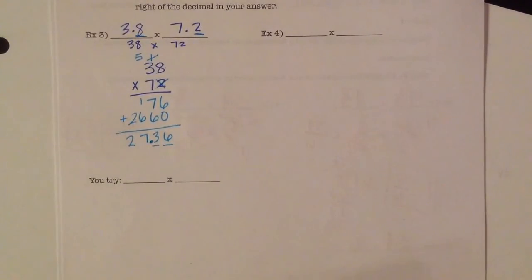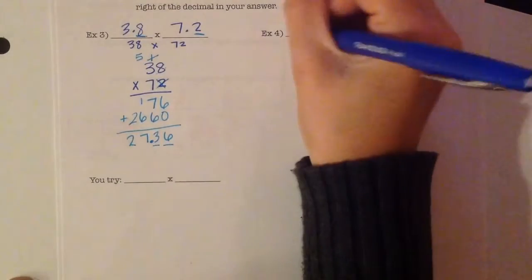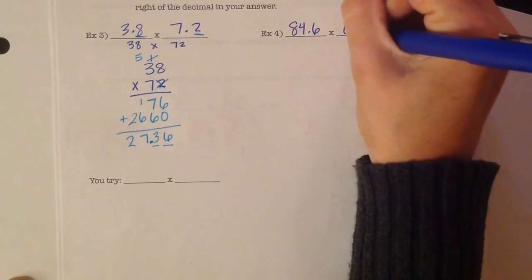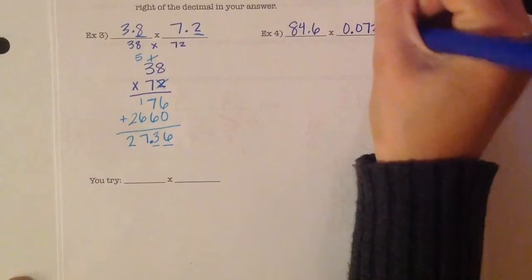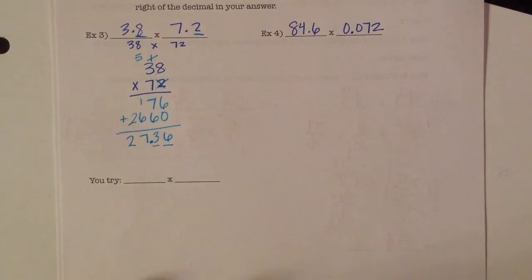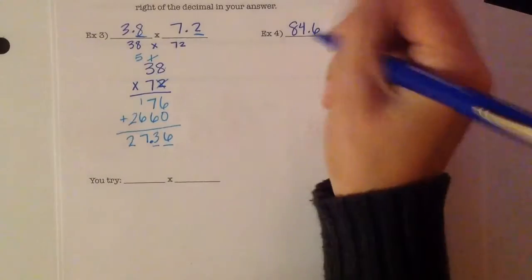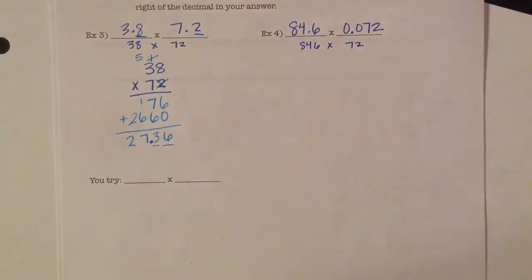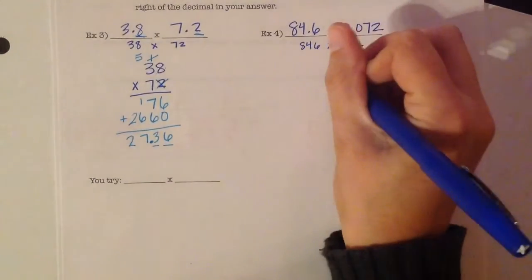Second example. We've got 84 and 6 tenths times 72 thousandths. So again, ignoring the decimal point. So this is basically 846 times 72. So let's go ahead and multiply that.